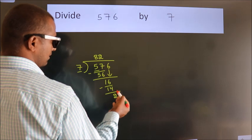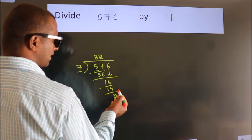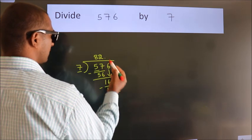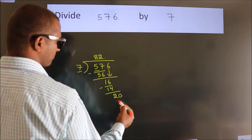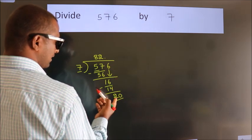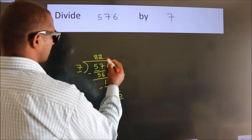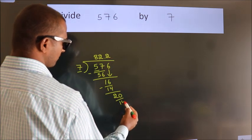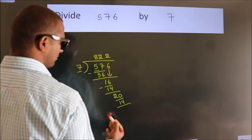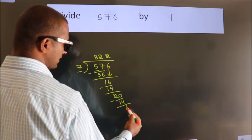After this, no more numbers to bring it down. So what we do is we put a dot and take 0. So 20. A number close to 20 in the 7 table is 7 times 2 is 14. Now we subtract. We get 6.